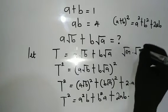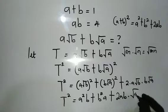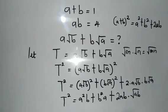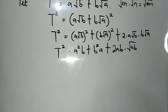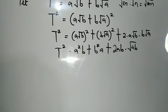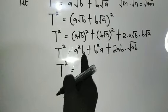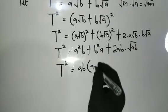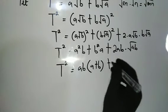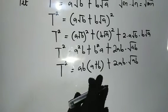Recall that the square root of m times the square root of n equals the square root of m times n. So we have the square root of a times b. Now t squared equals a²b plus b²a plus 2ab times the square root of ab. The common factor here is ab, so we factor it out and we're left with a plus b in the bracket, giving us ab times (a plus b) plus 2ab times the square root of ab.